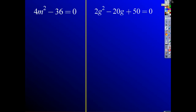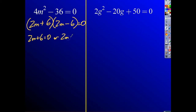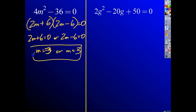Hopefully you had a chance to pause and try those. For 4m squared minus 36 equals 0, this is a difference of squares: 4m squared gives 2m, and the square root of 36 is 6. So I get 2m plus 6 times 2m minus 6 equals 0. Solving gives m equals negative 3 or m equals positive 3.